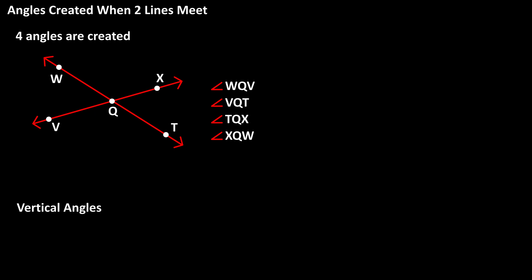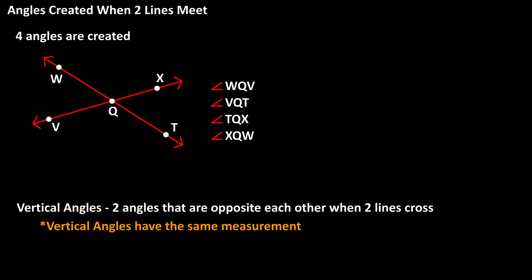Also, two sets of vertical angles are made. Vertical angles are angles that are opposite each other when two lines cross, and vertical angles have the same measurement.